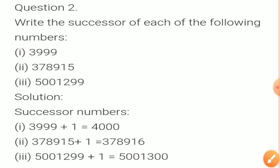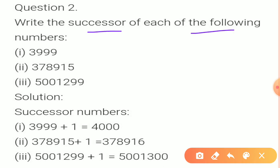Now question 2: Write the successor of each of the following numbers. What is the meaning of successor? Successor means plus 1 to the given number. We will add 1 to each of the numbers, then we will get the successor of each number.